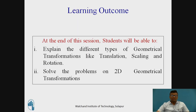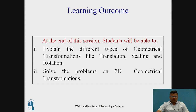What are the learning outcomes? The student will be able to explain the different types of geometrical transformations like translation, scaling, and rotation. Also, they can solve the problems or numericals based on the 2D geometrical transformations.